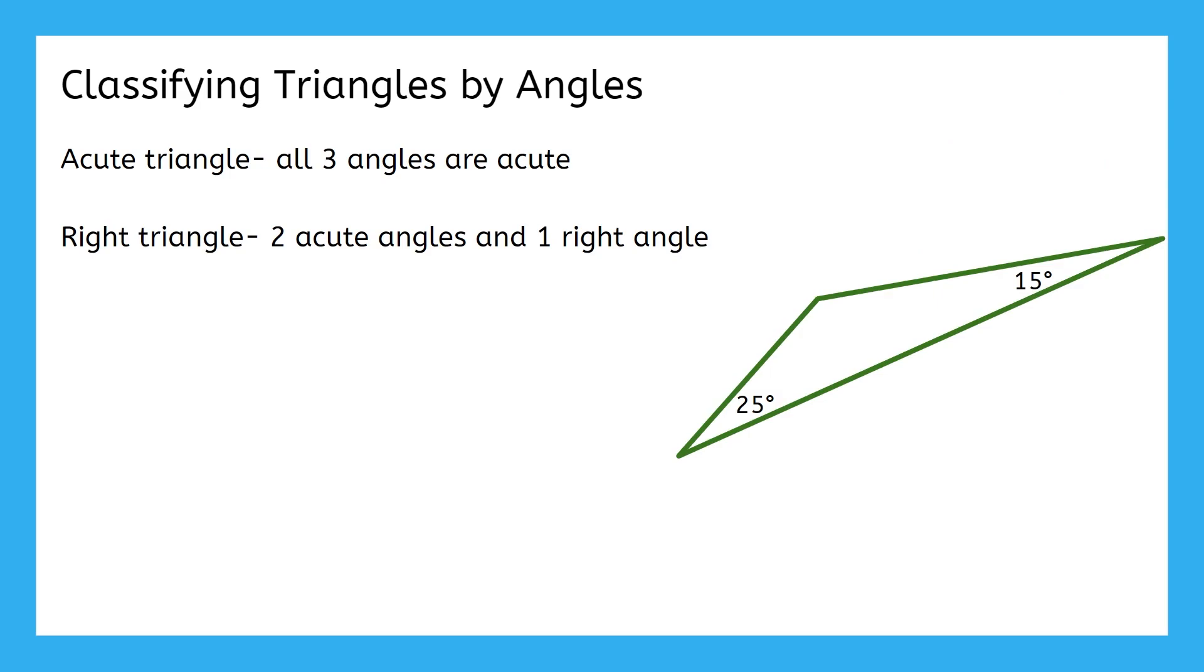Look at this triangle next. Pause the video and calculate the missing angle. What type of angle is a 140 degree angle? It's an obtuse angle, which means this is an obtuse triangle.